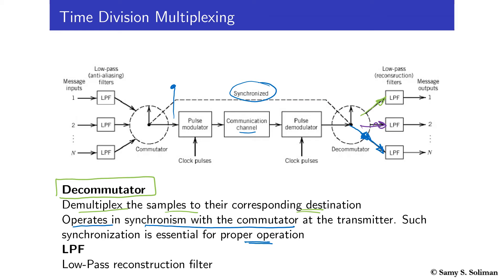After demodulation, we need to perform the demultiplexing function. We use the decommutator at the receiving site. The decommutator demultiplexes the samples to their corresponding destinations — it distributes the samples of the first signal to the first path, samples of the second signal to the second path, and samples of the last signal to the last path. To do this it must operate in synchronization with the commutator, so that while the commutator is transmitting a sample of signal N and it has undergone pulse modulation and demodulation, the decommutator's arm is ready to deliver that Nth sample.